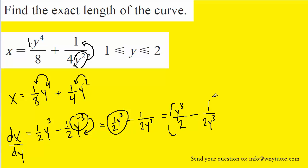And then we can condense this difference of fractions into a single fraction by finding a common denominator. So to find that common denominator, we can multiply this by y^3 and also the numerator by y^3. So we'll have (y^6 - 1)/(2y^3).